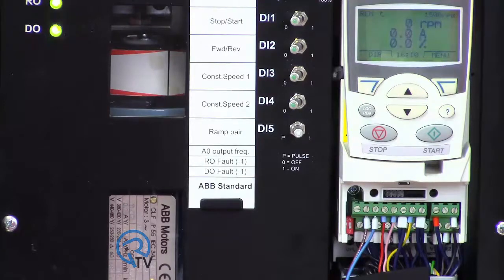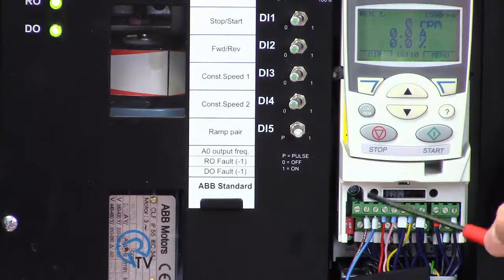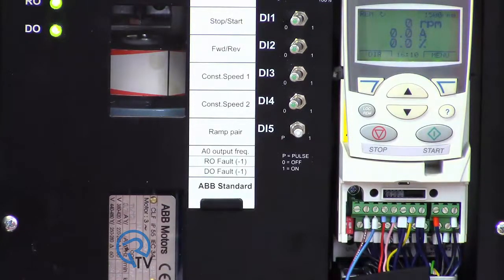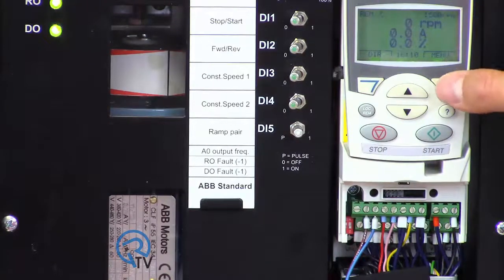We will set the VFD to have a variable speed between 200 and 1400 RPMs based on that sensor input. Verify that the analog input selector is set for current. Note that the two inputs are independently selectable. After setting all motor parameters, it's time to scale the analog input.